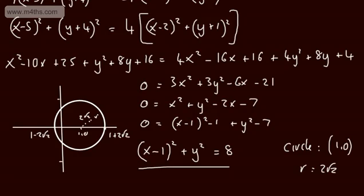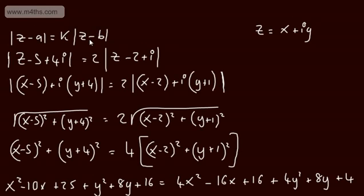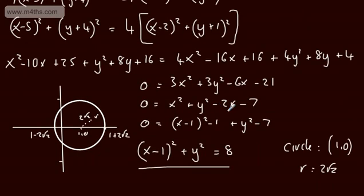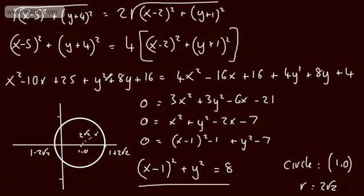That's now the form where we've got the modulus of Z minus A is equal to K multiplied by the modulus of Z minus B, when K is a real number and it's not equal to 1. We'll do some more examples of this in future videos. But if you just want to go and manipulate it algebraically, that will give you your quick sketch and your Cartesian form.